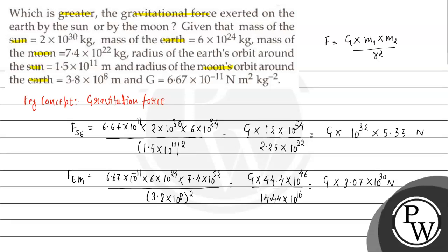Now comparing the two results: force due to the sun divided by force due to the moon — G cancels out. We get 5.33 divided by 3.07 and 10^32 divided by 10^20, which gives approximately 10^12 times greater. Dividing equation 1 by equation 2 shows the sun's gravitational force on earth is significantly larger.